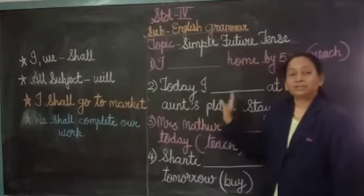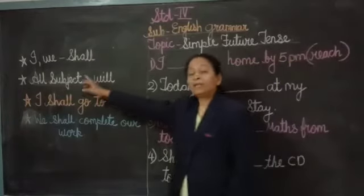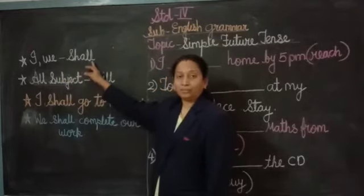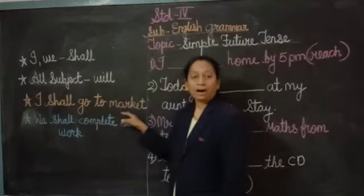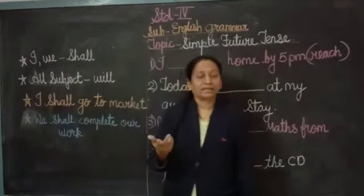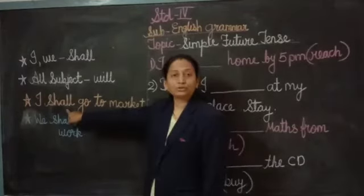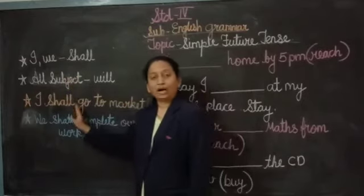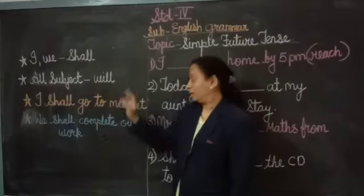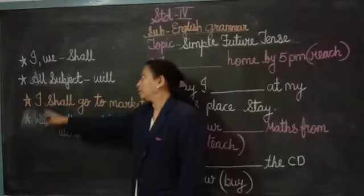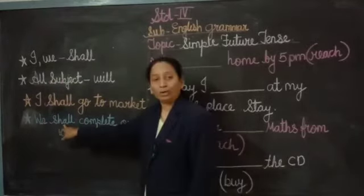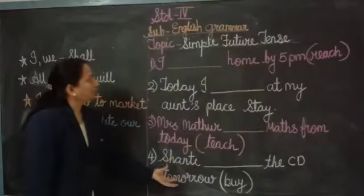Now, when we are talking about 'I' or 'we', we will always use 'shall'. For example: 'I shall go to the market' or 'We shall complete our work' — we use 'shall' here. When talking about 'you', 'he', or 'she', we always use 'will'. So 'shall' is for I and we, and 'will' is for all others.